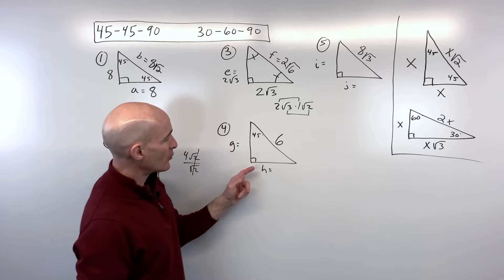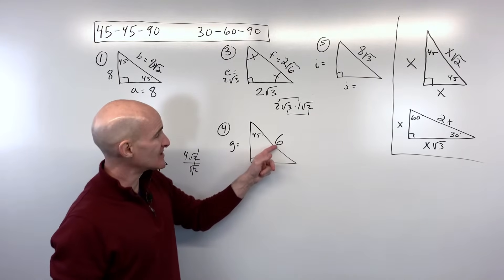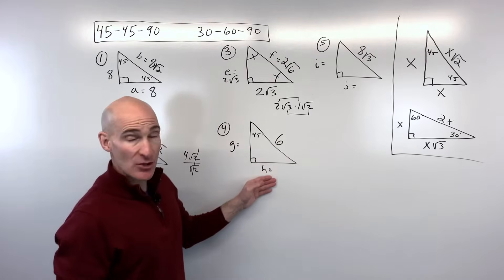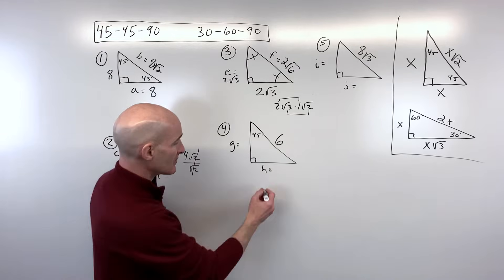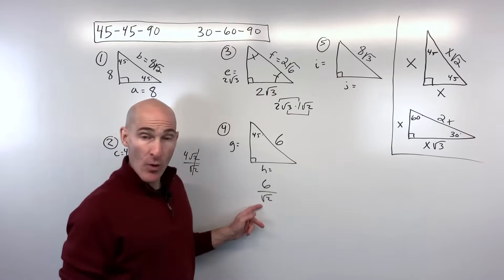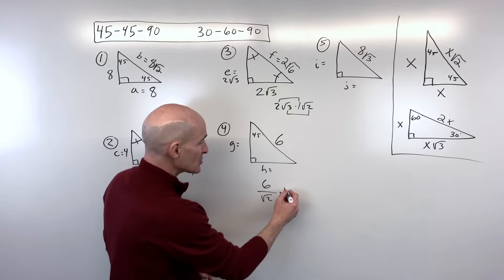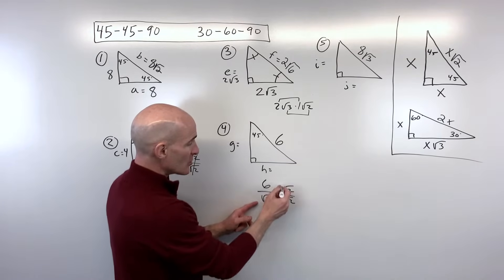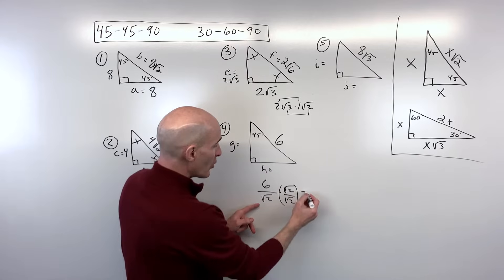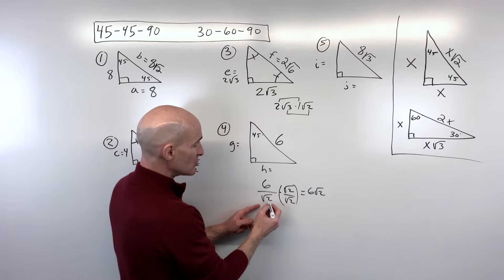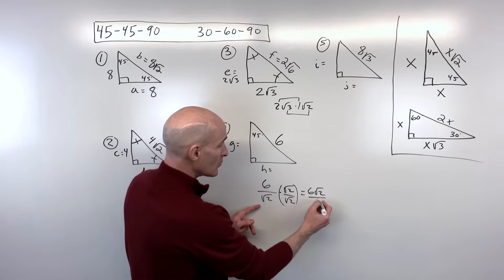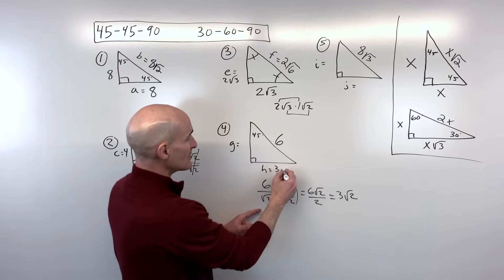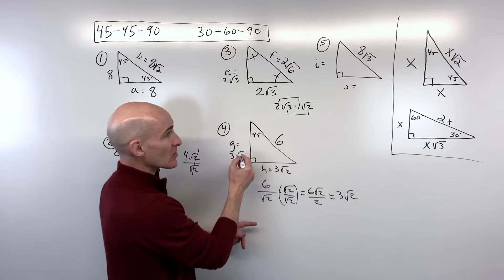For number four, we have a 45-45-90 and they're giving us the hypotenuse of 6. We divide by √2 to get back to the leg, but we don't want √2 in the denominator — that's improper. So we rationalize by multiplying numerator and denominator by √2. That gives us 6√2 over √4, which is 2. The 6 and 2 reduce to give us 3√2 for each leg, since the legs are congruent.